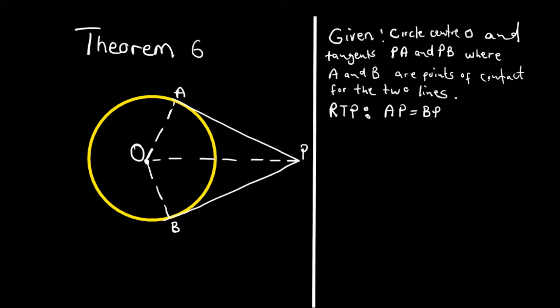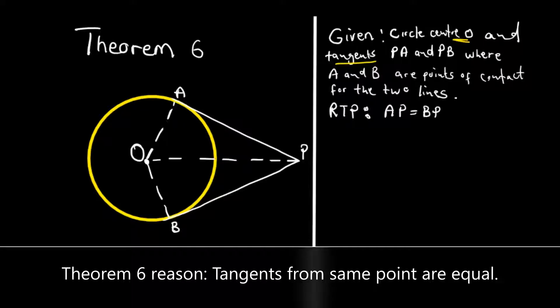In Theorem 6, we are given a circle with center O having tangents PA and PB, where both A and B are points of contact for the two lines. We are required to prove that AP is equal to PB.